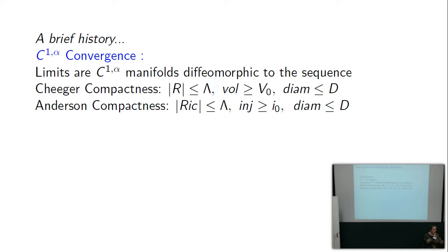They end up being C1-alpha diffeomorphic, and the limit spaces are C1-alpha manifolds — the charts are C1-alpha, not C2. The injectivity radius bound in Anderson's is a consequence of Cheeger's conditions; Cheeger's conditions give you the injectivity radius bound, and in Anderson's case that's required because the Ricci bound loosened up the conditions too much to just have volume. That's the oldest notion of convergence for Riemannian manifolds.